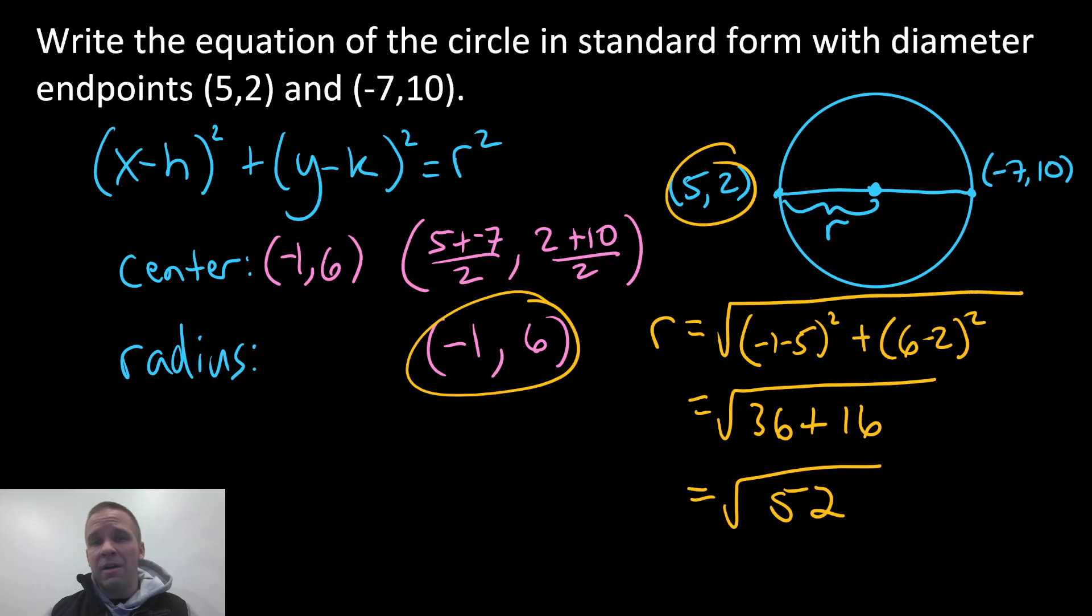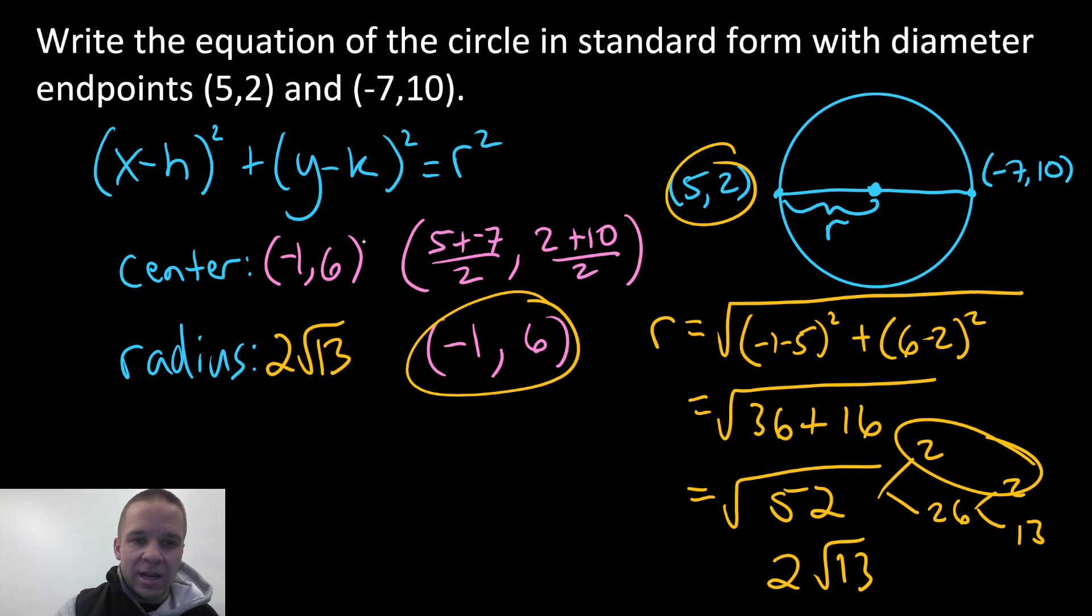Now in math, we'd like you to have simplified radical form. So if I'm gonna break that thing down, it's gonna be 2 and 26, 2 and 13. I got a pair of twos. So it's gonna end up being 2√13 for my radius. So 2√13, we got our center, we've got our radius.